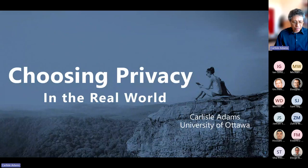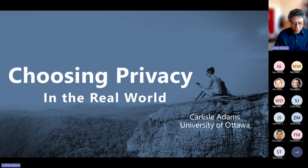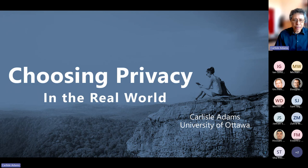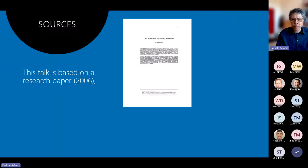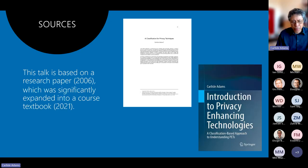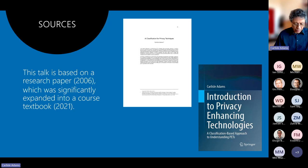This talk is about choosing privacy in the real world. Right off the bat, we do need to choose — privacy does not come by default in most cases any longer. That was maybe true many years ago, but it's much less true today. The focus of this talk is really on what we can do to protect our privacy in our daily lives, particularly in our online transactions. This talk is based on a research paper I did back in 2006 called 'A Classification for Privacy Techniques,' later expanded into a course textbook in 2021 called 'Introduction to Privacy Enhancing Technologies.'